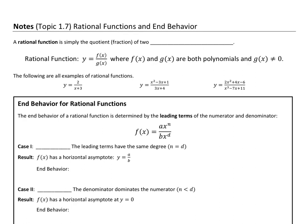By definition, a rational function is simply the quotient or the fraction of two different polynomials, which is why we started our study off with polynomials. We're going to have a polynomial in the numerator and a polynomial in the denominator. Here's our rational function example — this is like a textbook definition where you'd have f of x on top and g of x on bottom. The only caveat is that the denominator, g of x, cannot be equal to zero.